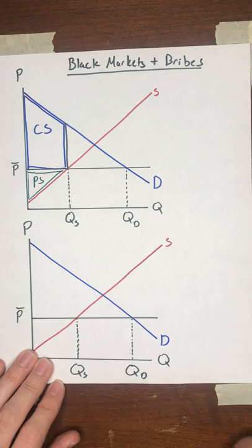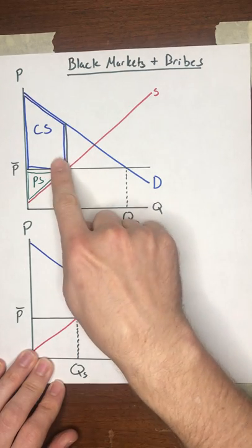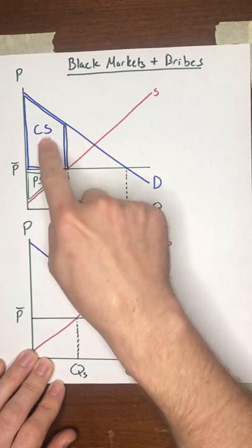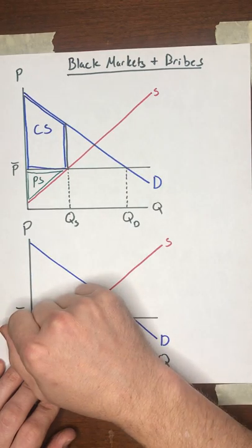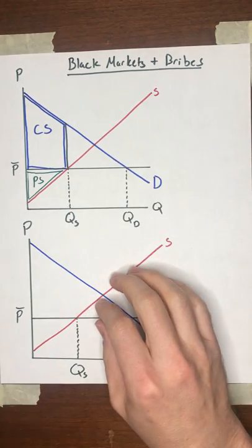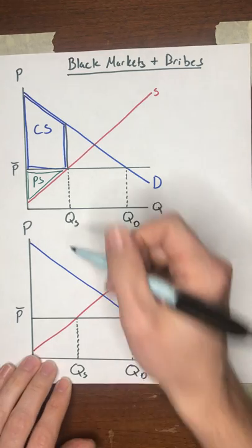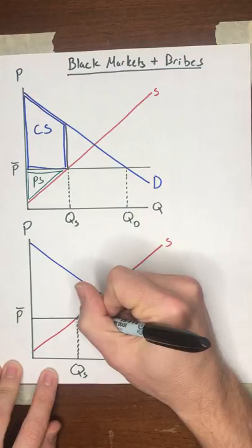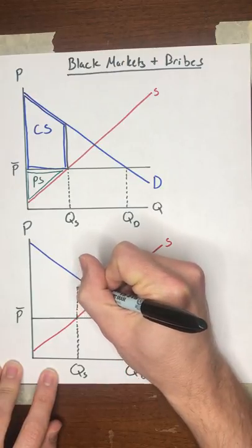Turns out though, under certain circumstances, this is not going to be the way the market works out where consumers capture most of these available gains from trade. To see why that is, let's think about what's going to happen under these circumstances where you have this shortage. Come down now to this graph.